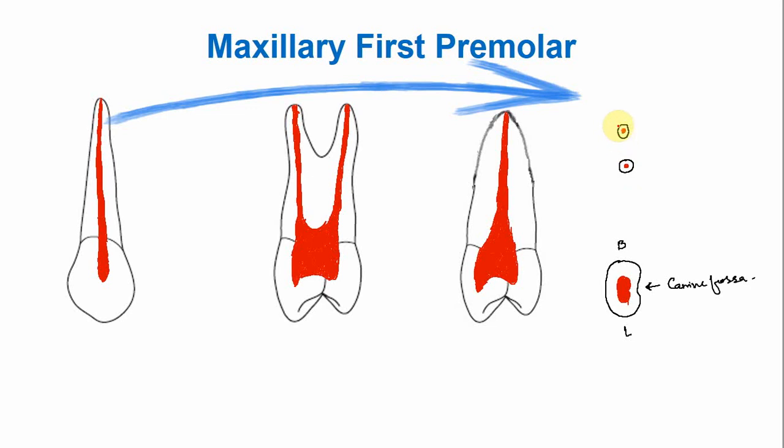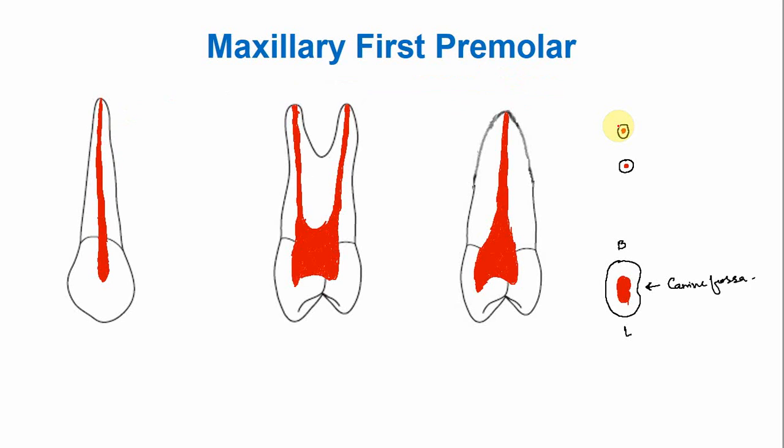There are additional variations to note. Three canals are present in less than 5% of cases, making them very rare. Sometimes the three canals are present within a single root, sometimes within two roots, and sometimes there are three separate roots in which the three canals are located.